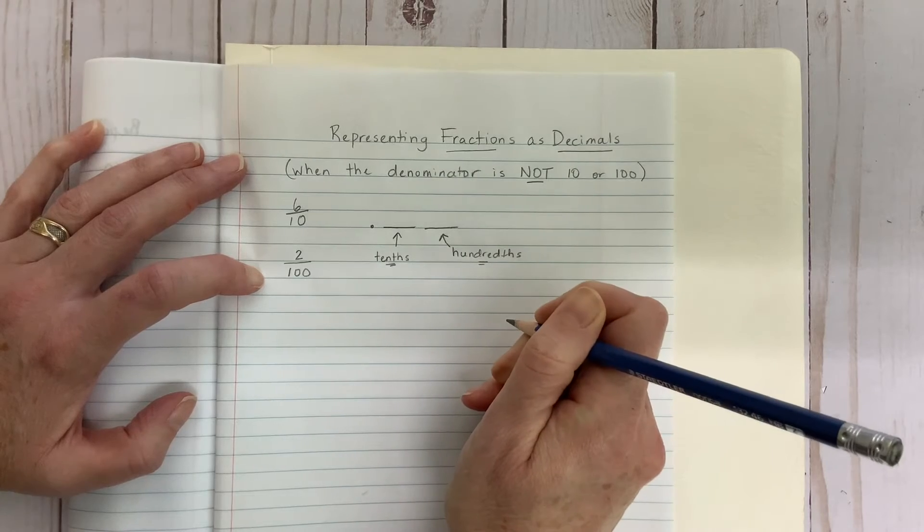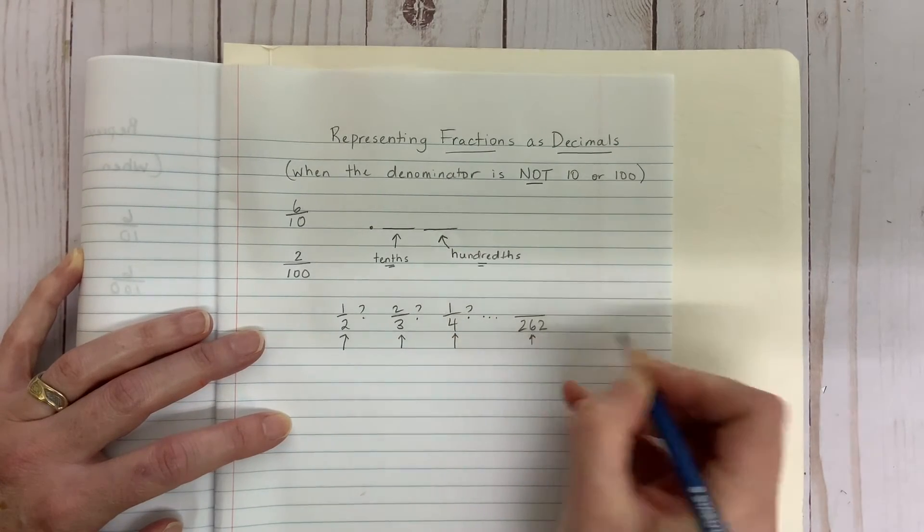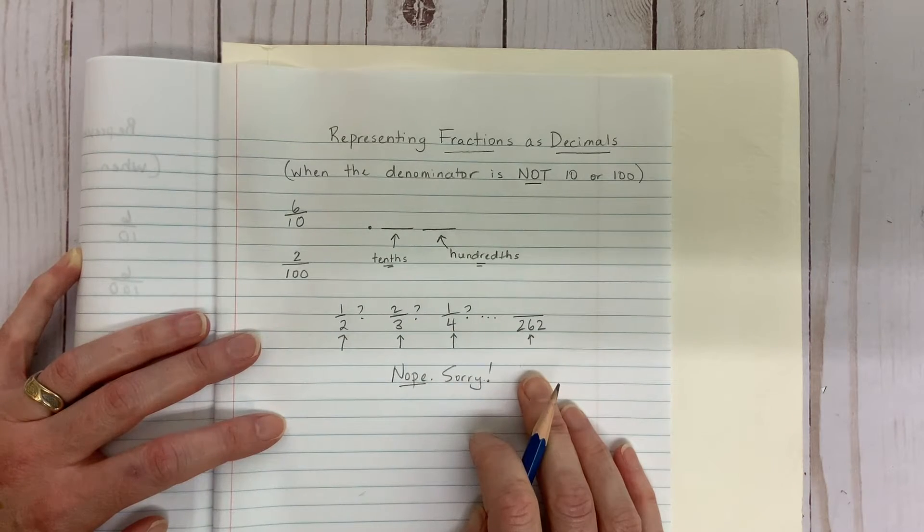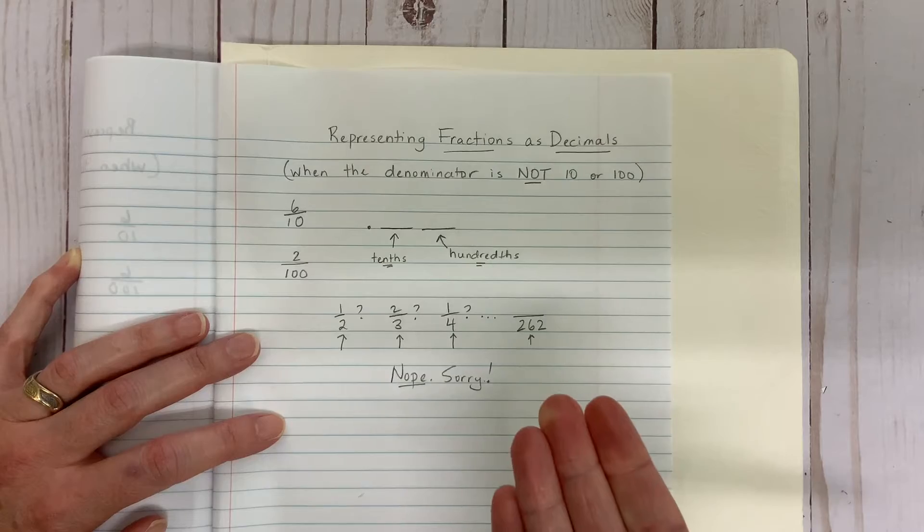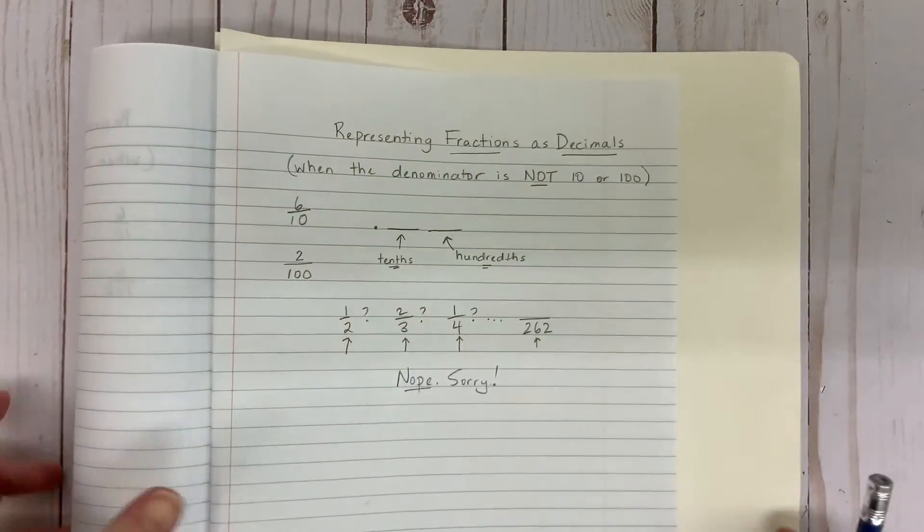There is no place for fractions with denominators like 2, 3, 4, or 262. So how do you represent those kinds of fractions as decimals? Good question. The answer? It can be done, but it takes a bit of figuring. Let me show you what I mean.